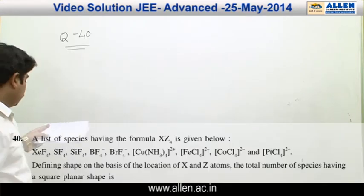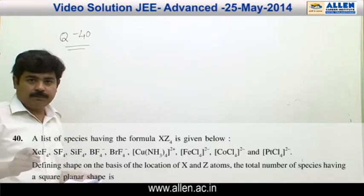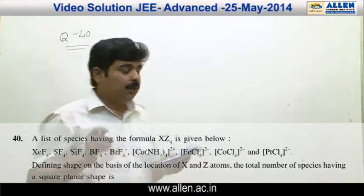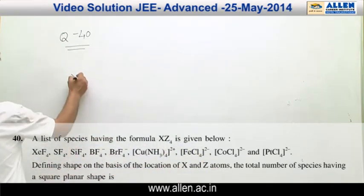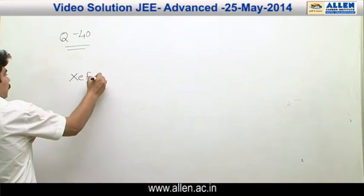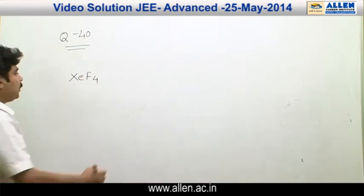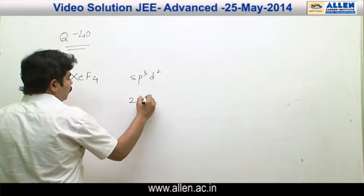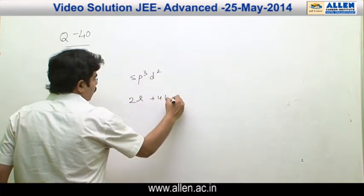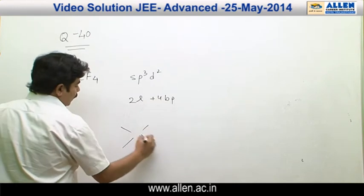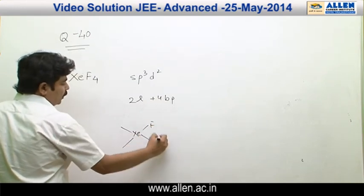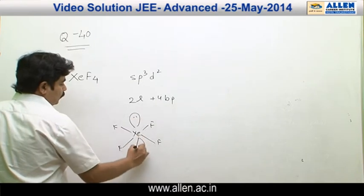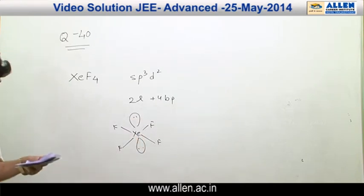In question number 40, 9 molecules are given. Identify how many molecules are square planar. The first option is XeF₄. XeF₄ has SP³D² hybridization with 2 lone pairs and 4 bond pairs, and therefore its geometry is square planar.